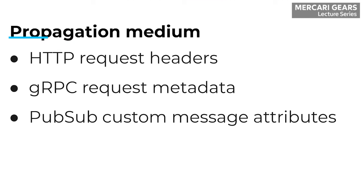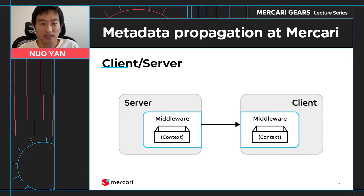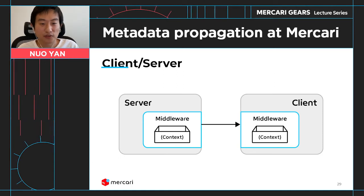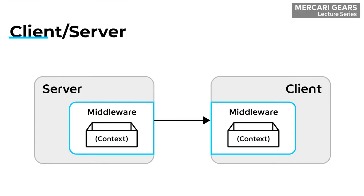For PubSub messages, we propagate metadata using custom message attributes. In order to make it easier for service owners to propagate metadata in their services, we developed middlewares that could be integrated into the client, server, and PubSub infrastructure. For HTTP and gRPC services, if the service receives requests from other services, the service needs to integrate with the server middleware, where it looks at the metadata from the HTTP or gRPC request header and then loads the metadata into an internal metadata store.